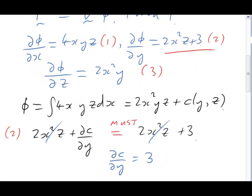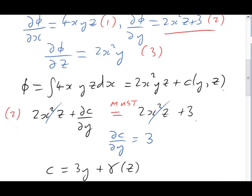This is a little bit different to the original example we looked at, where we got dc by dy equals 0. In that original example that meant that c didn't depend on y at all. Here c does depend on y. In fact we can integrate that equation and get that c equals 3y plus another constant. I'm going to call the constant gamma. But gamma could depend on z. It can't depend on y because it's a constant as far as y is concerned, because we're doing a y integration. And c never depended on x in the first place. So that just leaves z.